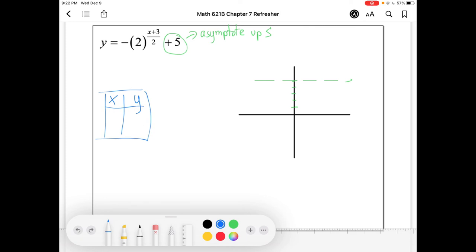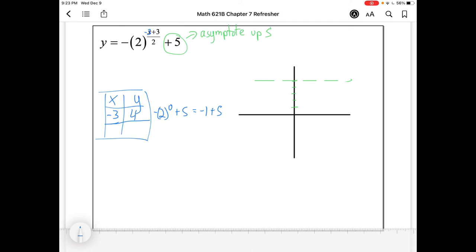If I chose the x value of negative 3, let's see what would happen. I'd have negative 3 plus 3 over 2 in the exponent. In other words, that would make my exponent a 0. Is it required that I choose this x value? No. Any two points are going to be fine. I just want to make my life as easy as possible. So negative 2 to the 0, so 2 to the 0 is just 1. So we have negative 1 plus 5, and we'd have this point negative 3, 4. Maybe I'll graph the actual function in blue. It's a point, negative 3, 4 is on it.